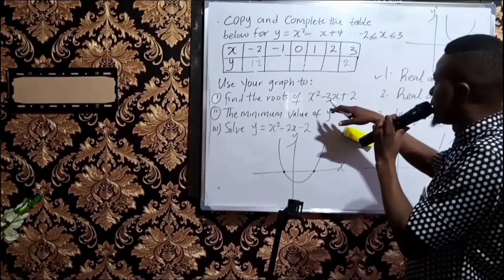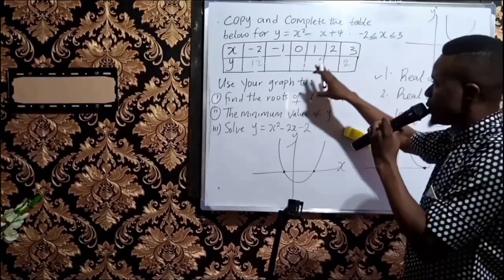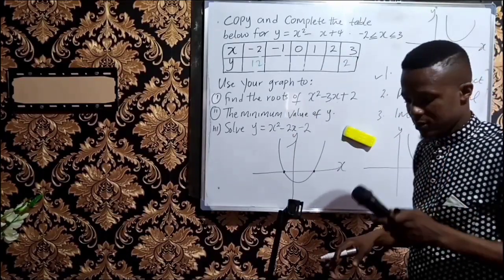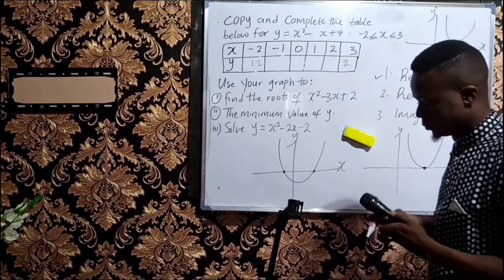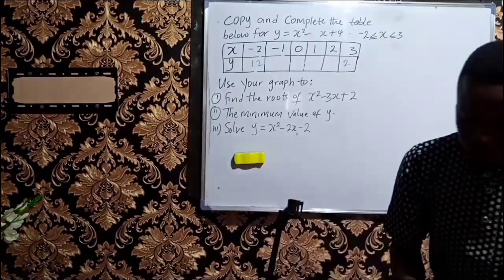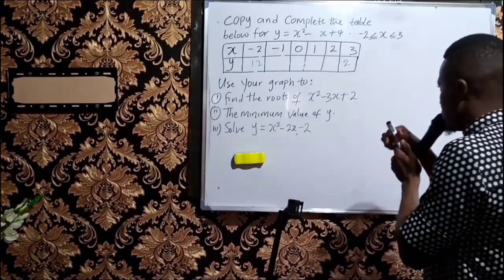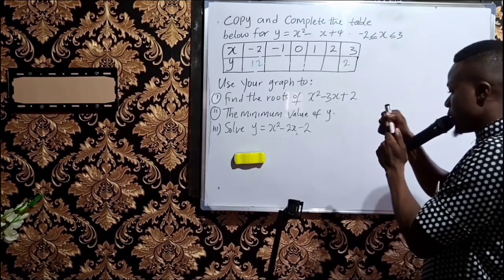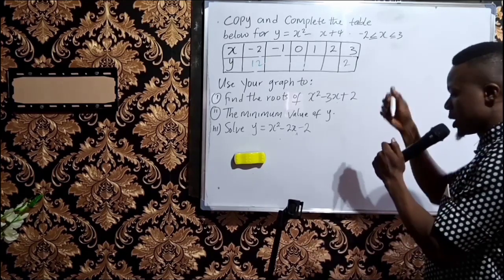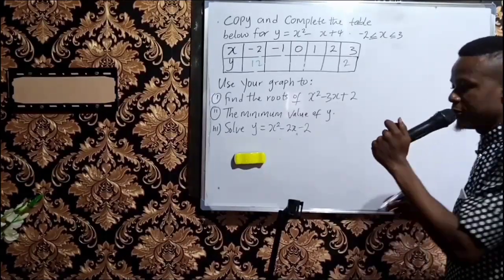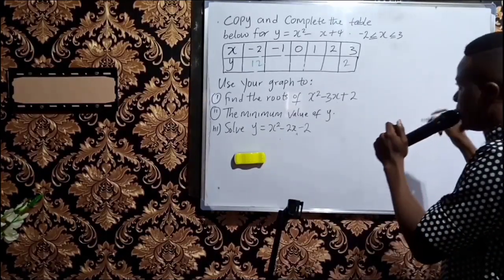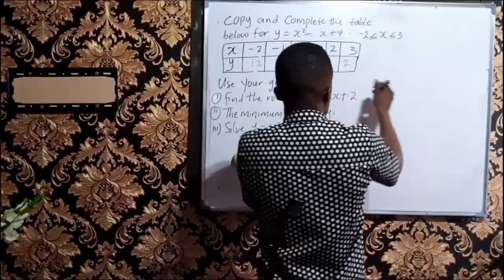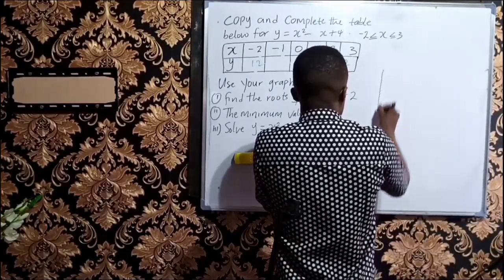Now let's go to the main business. The question was asked here, so let us calculate together. Using a graph to solve a quadratic equation implies that you have to first make out a table of values — that is why we have to copy and compute the table.